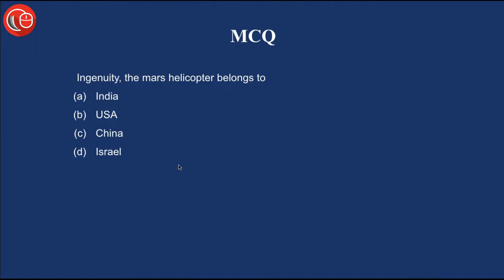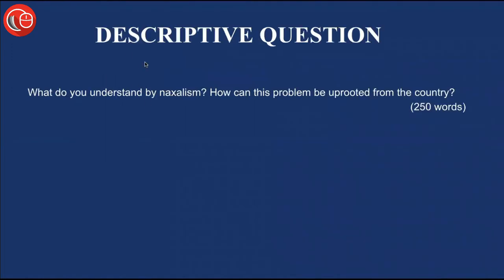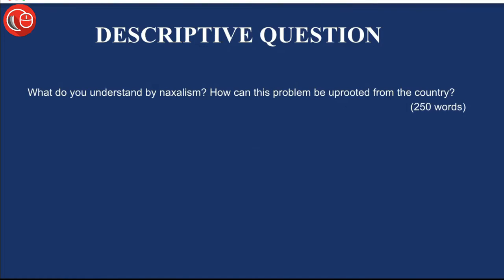For all those who want to download the PDF of today's slides, you can check out the link of our Telegram group in the description box. Please be assured that this link is correct and you will get the right updates daily regarding the PDFs. Also, the descriptive question for the day is: What do you understand by Naxalism, and how can this problem be uprooted from the country? Write your answer in a maximum of 250 to 300 words.